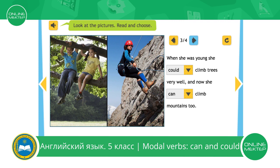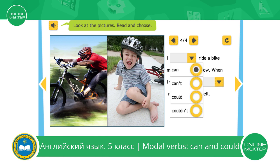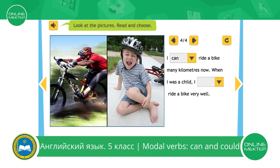Next picture. Look at this man. What is he doing? Let's complete the first sentence. I ride a bike many kilometres now. I can, can't, could, or couldn't. I can ride a bike many kilometres now.